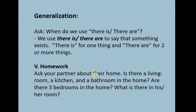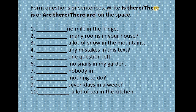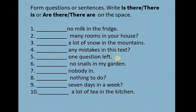Give them homework: ask your partner about their home — 'Is there a living room, a kitchen, and a bathroom in the home? Are there three bedrooms in the home? What is there in his room?' If you still have time, give them this practice exercise: form questions or sentences using 'is there,' 'there is,' 'are there,' or 'there are' in the space. For example: 'no milk in the fridge,' 'many rooms in your house,' 'a lot of snow in the mountains,' 'any mistakes in the text,' 'one question left,' 'no snails in my garden,' 'nobody in,' 'nothing to do,' 'seven days in a week,' 'a lot of tea in the kitchen.'